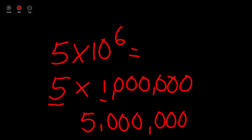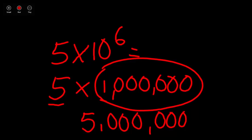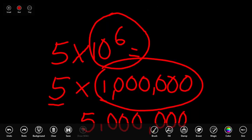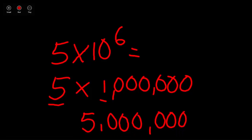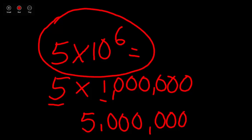Remember the three concepts covered in this video. First, powers of 10, such as 1,000,000. Second, powers of 10 written in exponential form, such as 10 to the power of 6. And third, scientific notation — equations such as 5 times 10 to the power of 6, which represents the number 5,000,000.